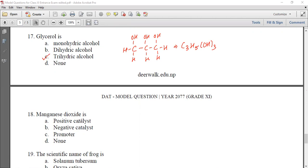This is a question for manganese dioxide. MnO2 is a positive catalyst used in oxygen preparation, lab preparation of oxygen. It is a positive catalyst. It makes the reaction faster. So manganese dioxide is a positive catalyst.